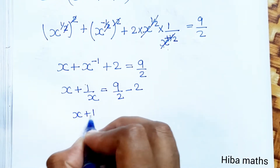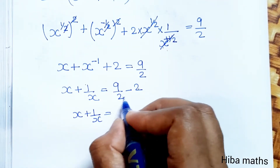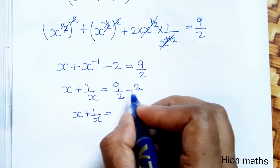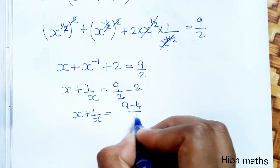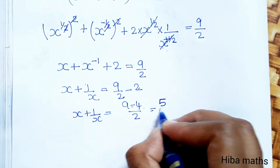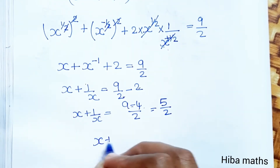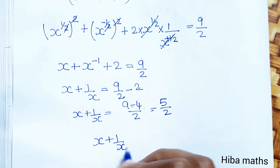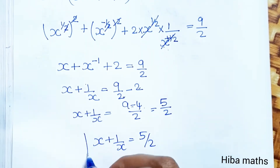So x plus 1 by x is equal to — taking LCM, 2 twos are 4, so 9 minus 4 by 2, that is 5 by 2. Therefore x plus 1 by x value is 5 by 2.